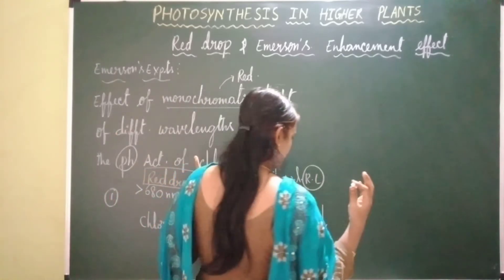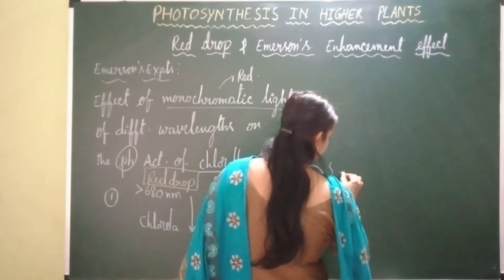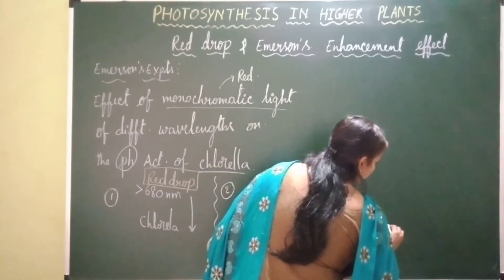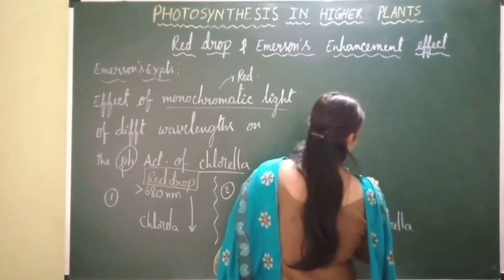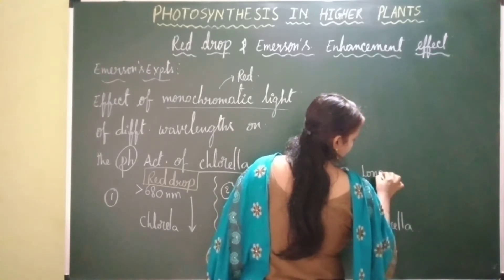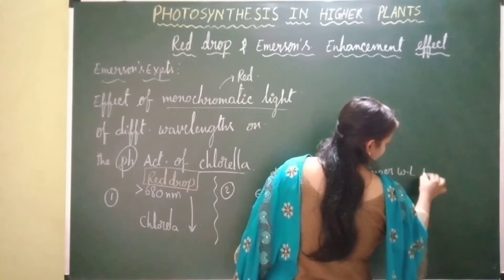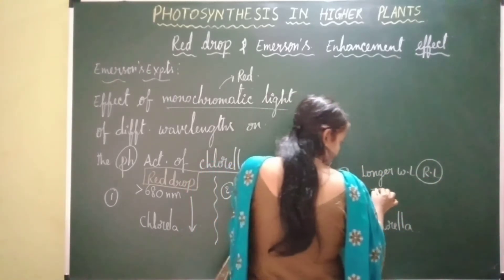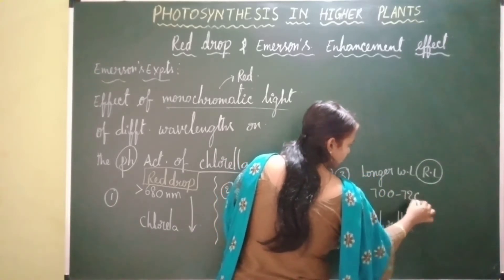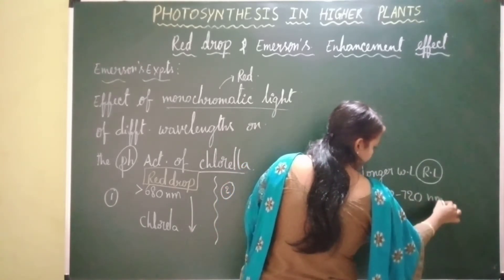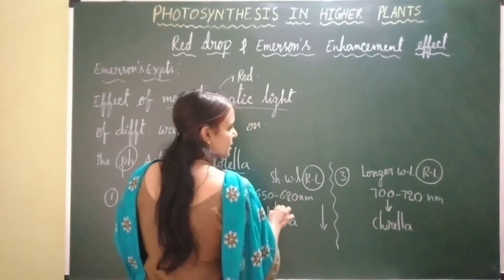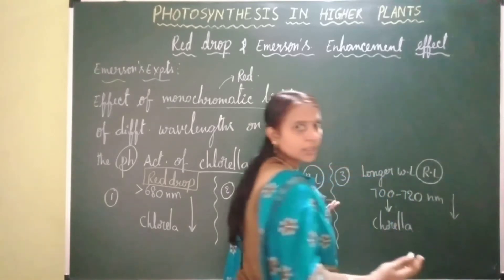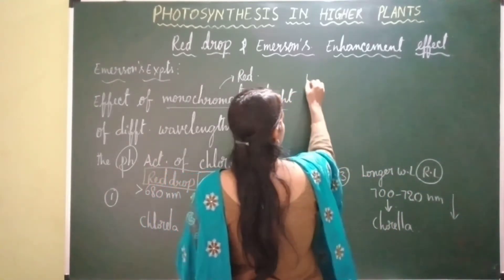In his third experiment, he exposed Chlorella to the longer wavelength of red light, ranging between 700 to 720 nanometers. He again observed that there is a decrease in the rate of photosynthesis.